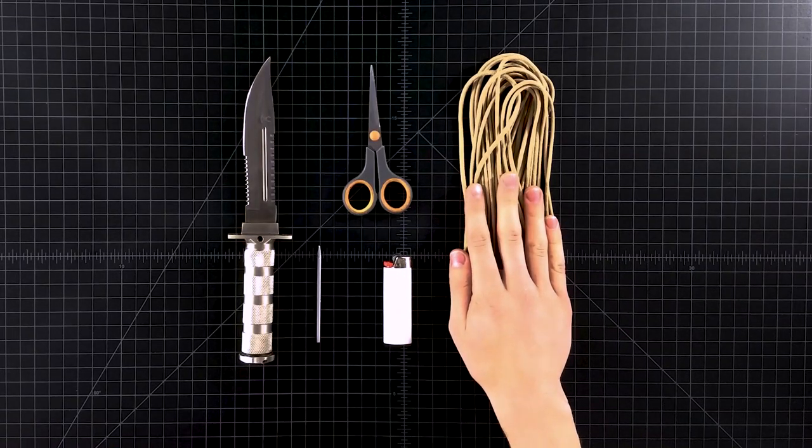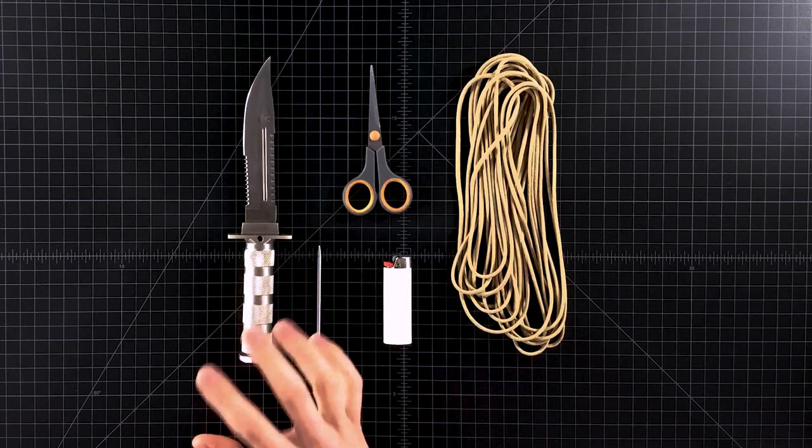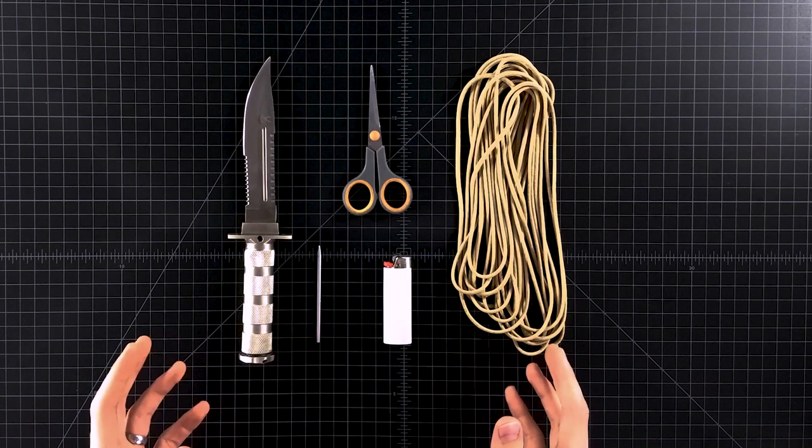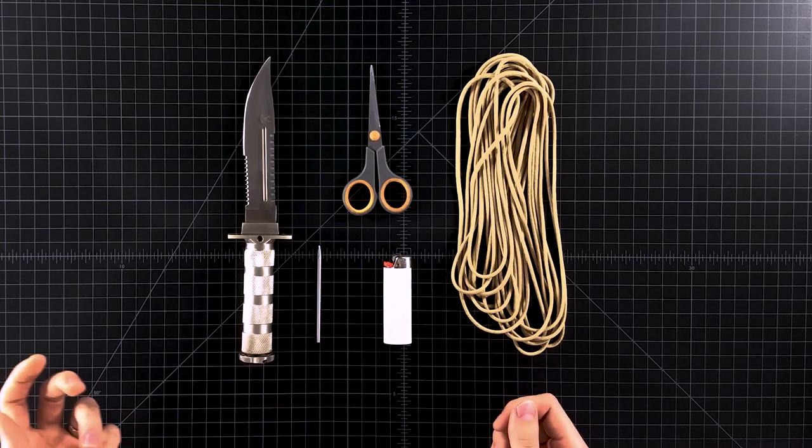I've got 25 feet of paracord for this handle here and that should be plenty. You don't want to use way too much either because then you'll be pulling all that extra cord through.